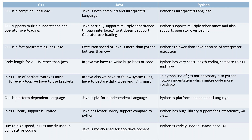The seventh difference is library support. C++ has very limited library support. Java has lesser library support compared to Python. Python has a huge library support — especially for data science and machine learning — with libraries like Pandas, NumPy, and many more.